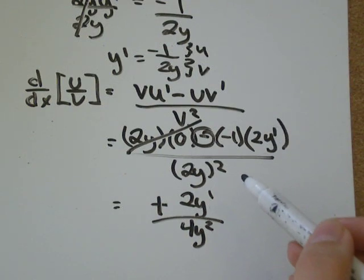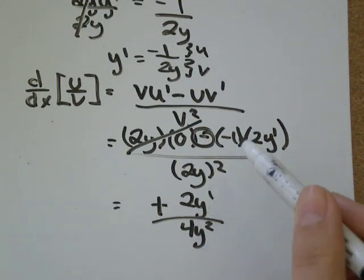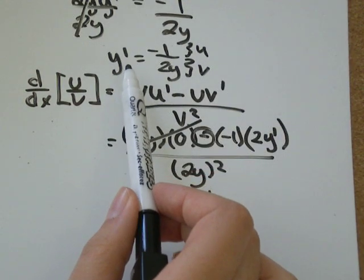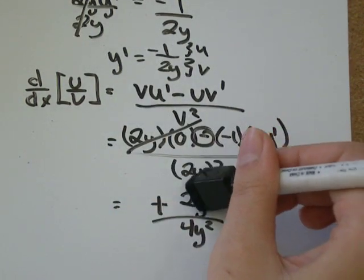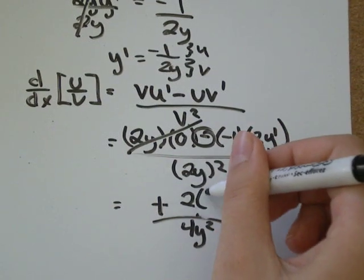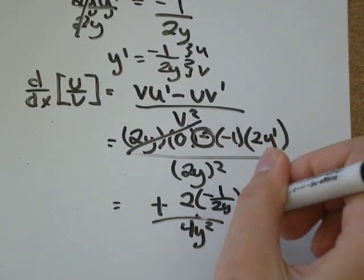And then all we do is we look at our y prime, and we replace that y' with what we said y' equaled up here. So I say that y' is -1/(2y).